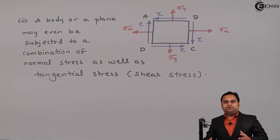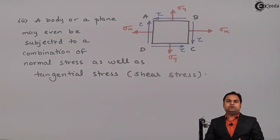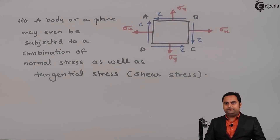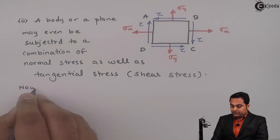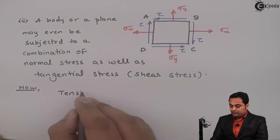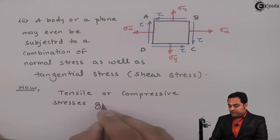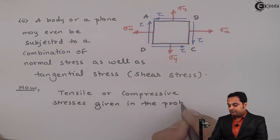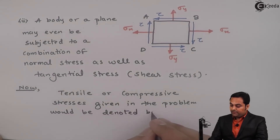As I have started the introduction of this chapter by explaining how stresses act on different planes, in this chapter we are going to see cases in which normal stress and shear stresses act along a plane. Sometimes the plane may even be inclined and we have to find out the values of stresses on that inclined plane. The notation used: tensile or compressive stresses given in the problem will be denoted by Sigma X or Sigma Y.